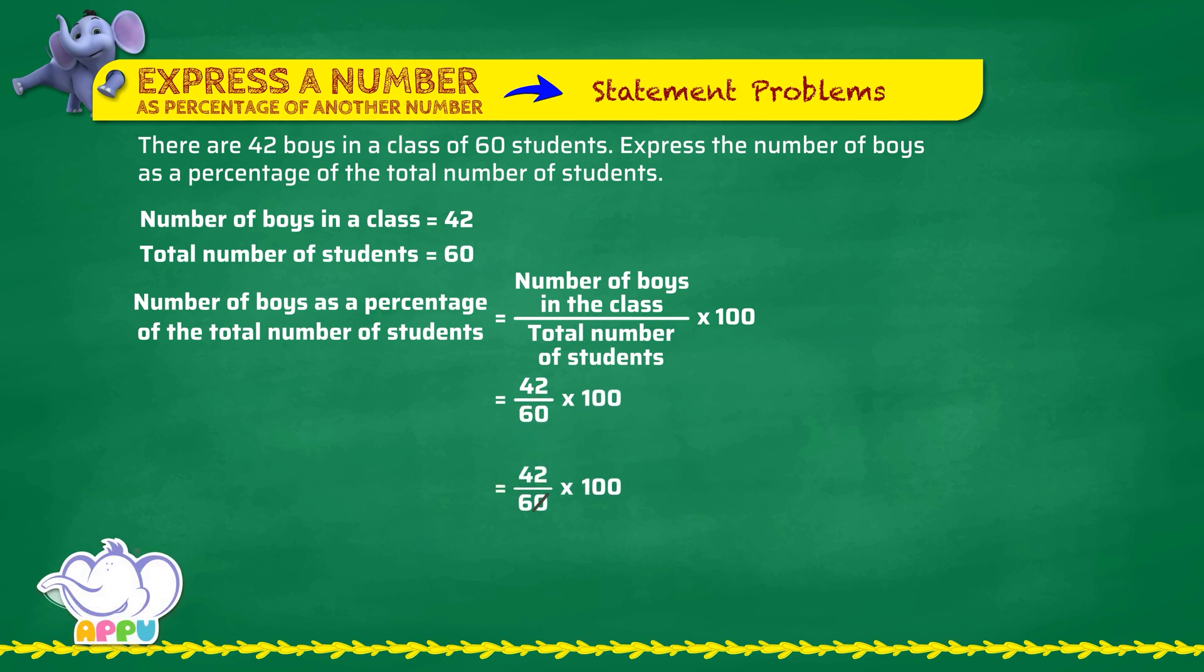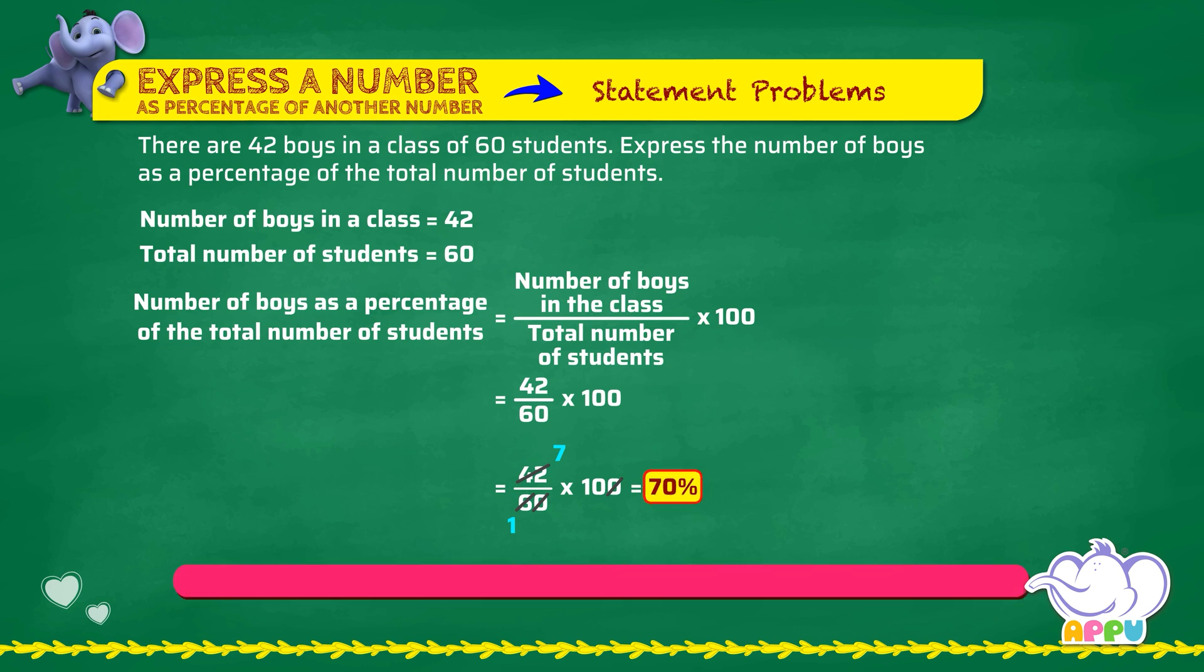Zero gets cancelled. Six divides six once. Six divides 42 seven times. This equals 70. We place a percentage symbol, that is 70%. So, the number of boys as a percentage of the total number of students is 70%. Excellent!